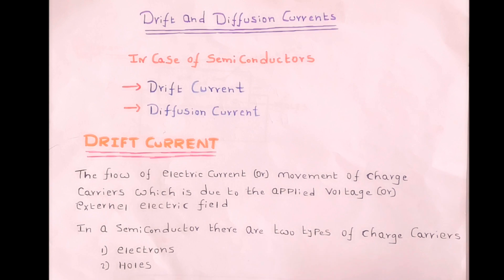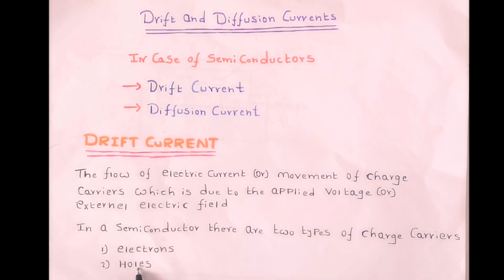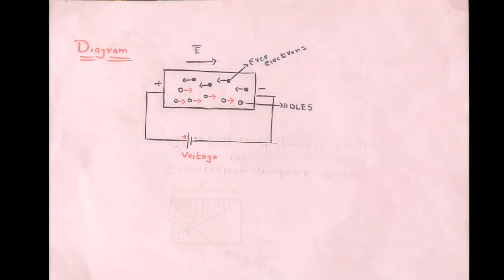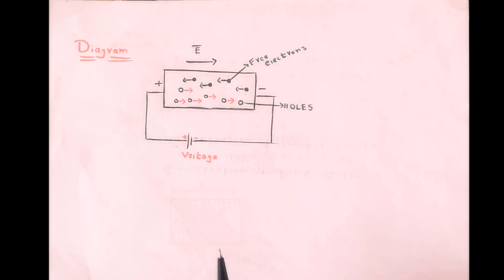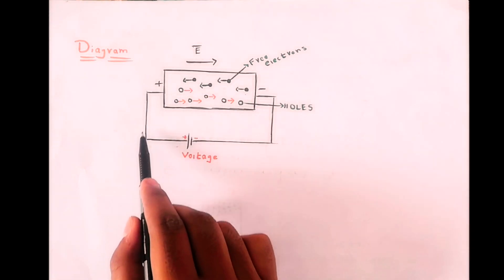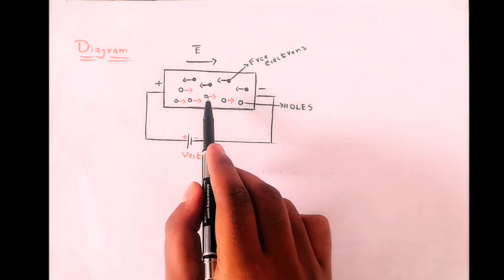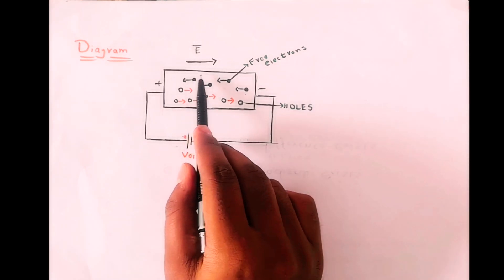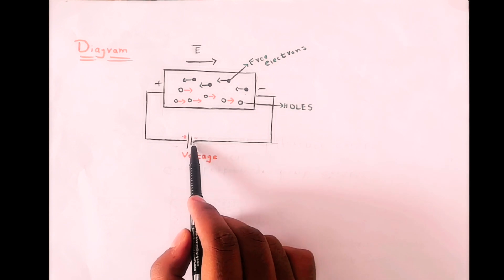In a semiconductor, there are two types of charge carriers: electrons and holes. Now we will understand this with the help of a simple diagram. We already know that like charges repel and unlike charges attract each other. Hence, the electrons are negatively charged and attracted towards the positive terminal of the battery. And holes are positively charged and attracted towards the negative terminal of the battery.